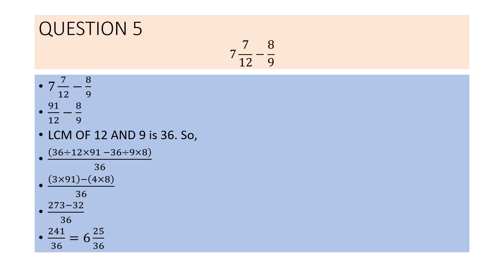Question 5: 7 and 7 by 12 minus 8 by 9. First, we convert the mixed number: 7 into 12 plus 7 gives 91 by 12. So the question is 91 by 12 minus 8 by 9. As the denominators are not the same, we find the LCM of 12 and 9, which is 36.